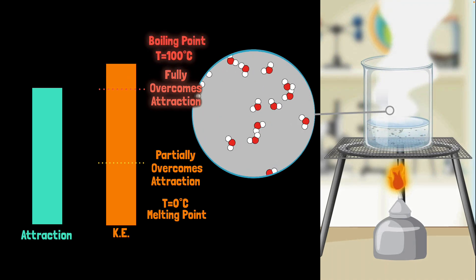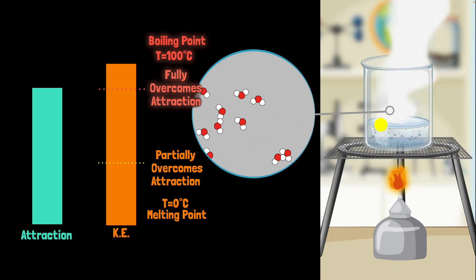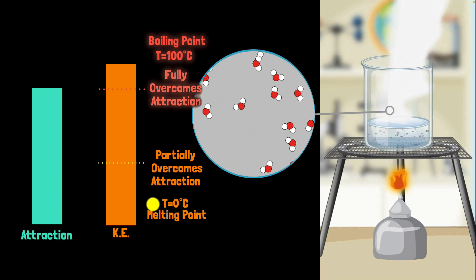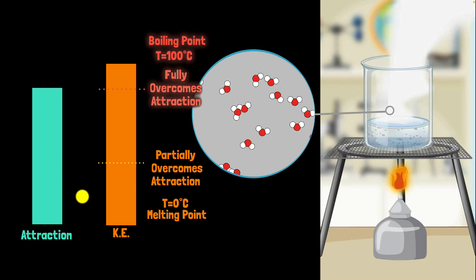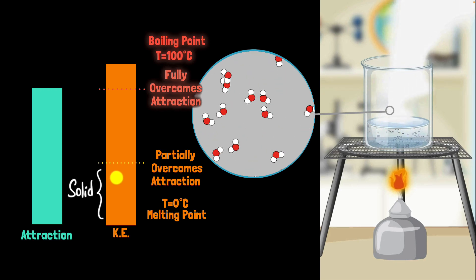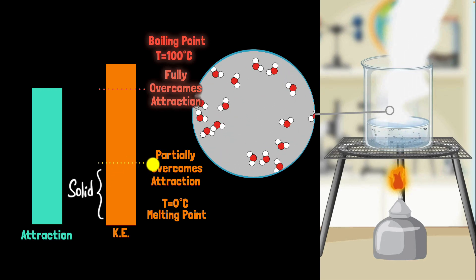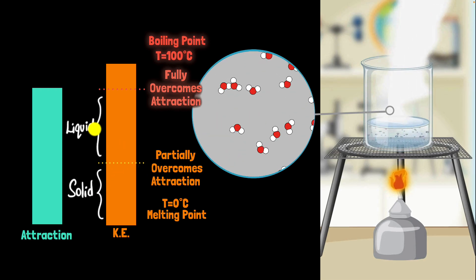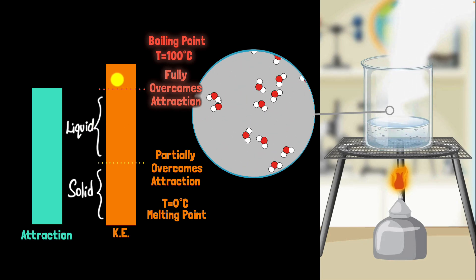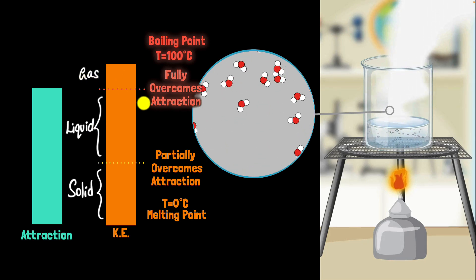And if we further heat it, the steam just gets hotter — nothing else will happen. So when the kinetic energy is too low to overcome any amount of attraction, we have a solid. When the kinetic energy is high enough to partially overcome the force of attraction, we have a liquid. And when the kinetic energy is high enough to fully overcome the force of attraction, we get a gas.